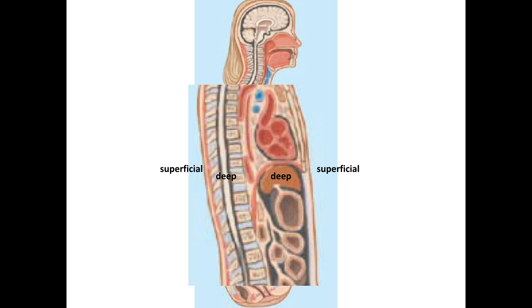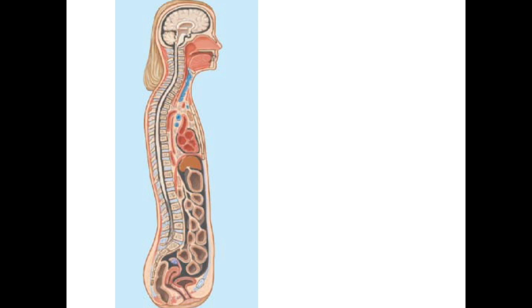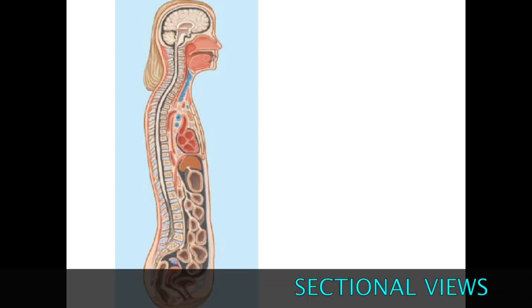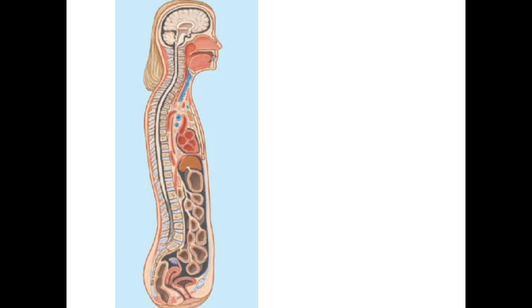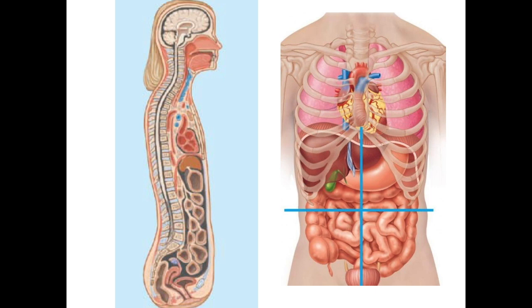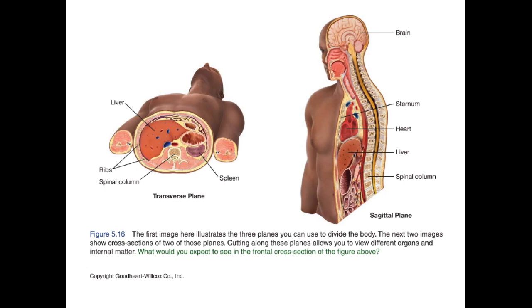The next subject concerning terminology concerns sectional views. This figure shows a person cut down the midline, dividing her into left and right to view the internal organization of the body. The term anatomy literally means cutting up, because this is the traditional way of understanding the internal organization of body parts. Some of these two-dimensional views take some getting used to, but over time you can start to put different views together to get a better understanding of the body's organization.